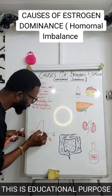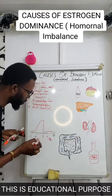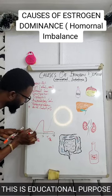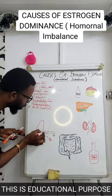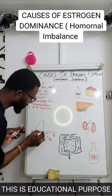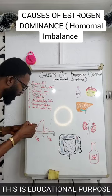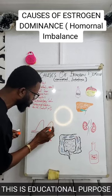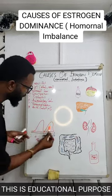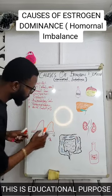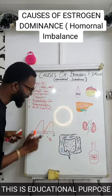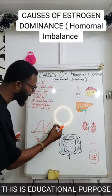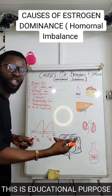Then from the luteal phase, estrogen remains down. But when you come to progesterone, during the follicular phase it is very low. By the moment the egg is released, progesterone starts going up. And corpus luteum is what will release or produce this progesterone after ovulation.